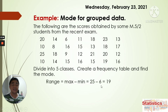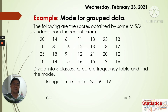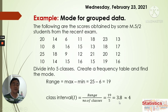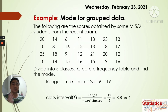So the range is 25 − 6 = 19. From here, we find the class interval: range divided by the number of classes, which is 19 ÷ 5 = 3.8, approximately 4. Remember, if the result has a decimal — like 0.1, 0.2, 0.3 — you go to the next whole number. So 3.8 rounds up to 4.